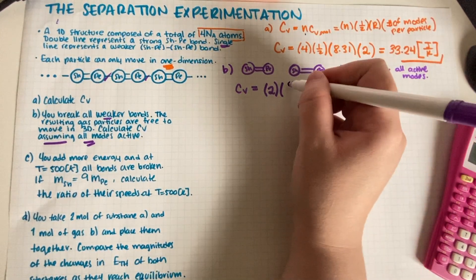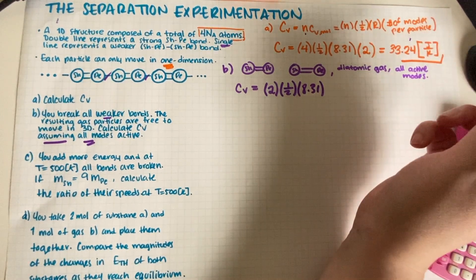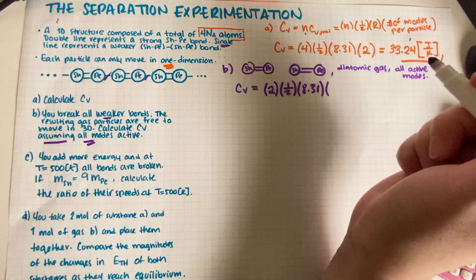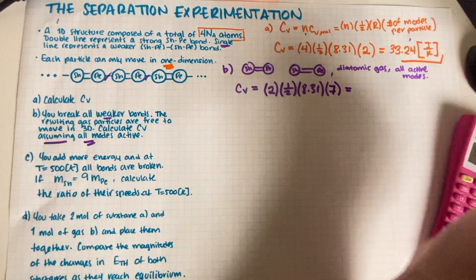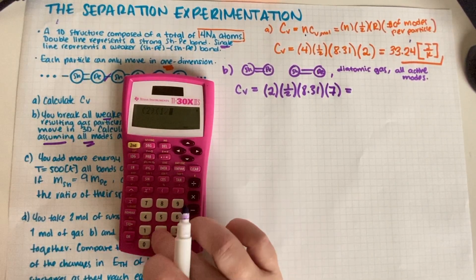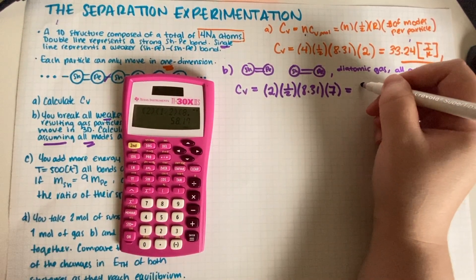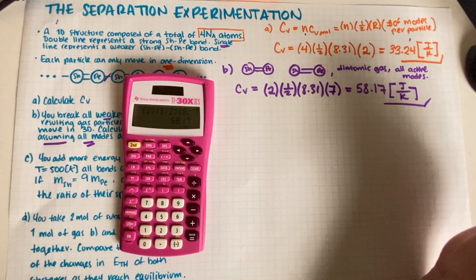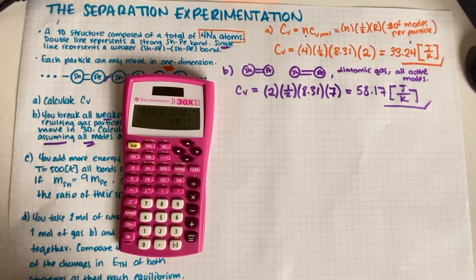So now this is one-half, that doesn't change, that's the equation. 8.31, that's the equation. And then we have to change the number of modes per particle because now we have a diatomic gas with all active modes. We know, because I just did a review session that's already on YouTube, that for a diatomic gas all active modes means a total of seven active modes. So let's do our multiplication. I'm sorry if I'm going too fast with the counting of modes, but I literally made a video that's specific about that. So 58.17. Feel free to go back and see that video if you don't know how I'm counting my modes. But otherwise, Part B is done.